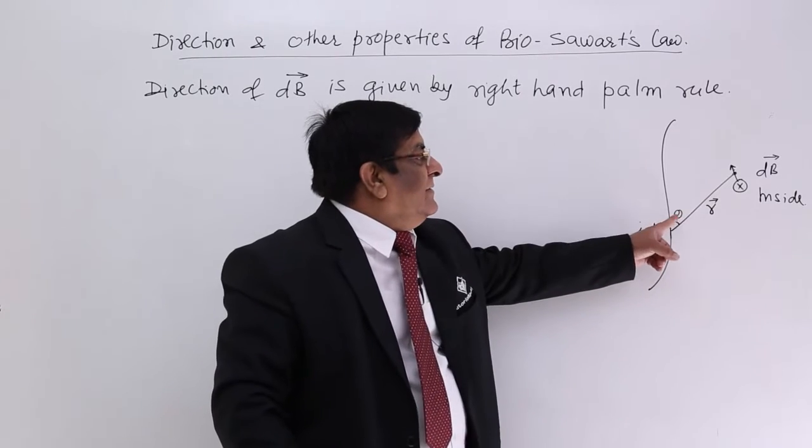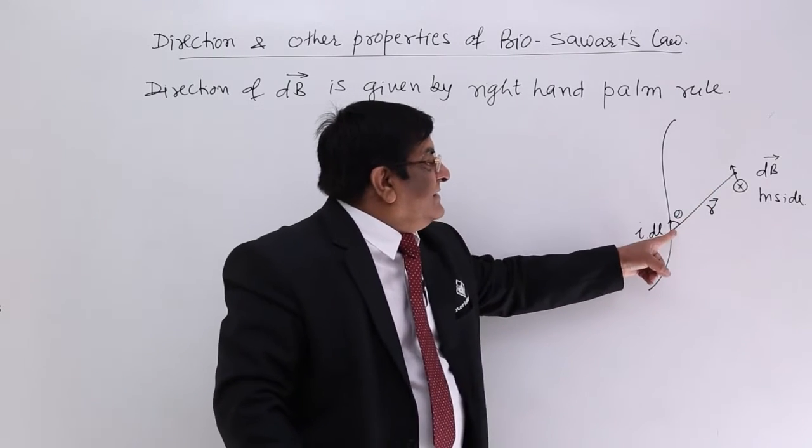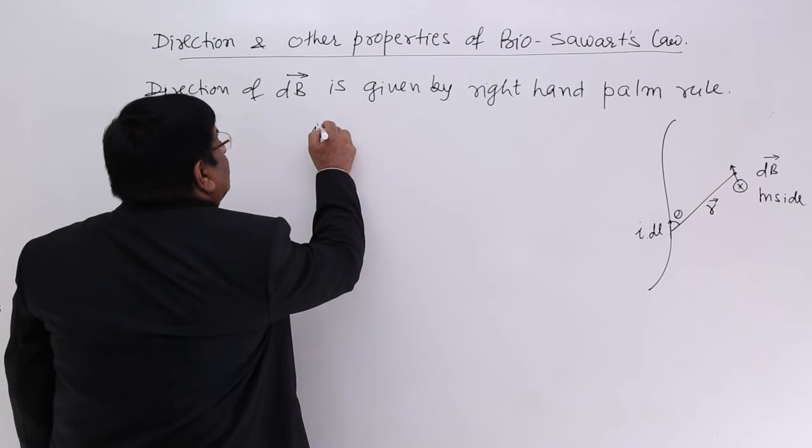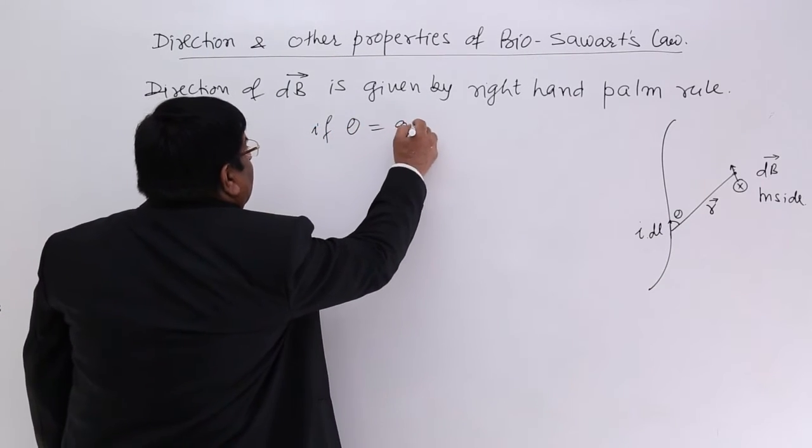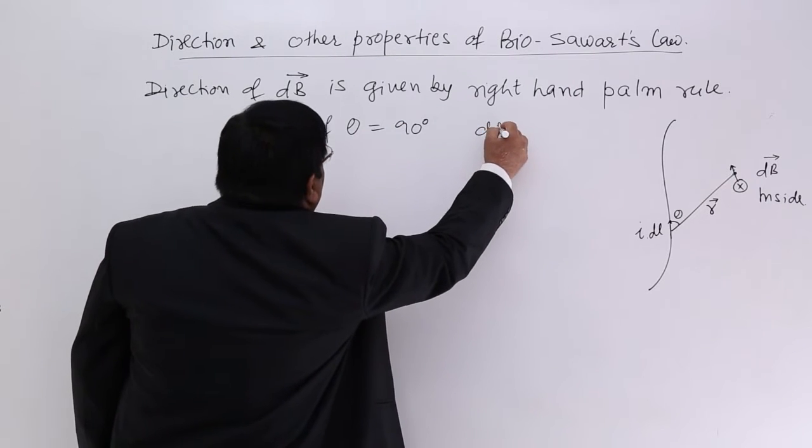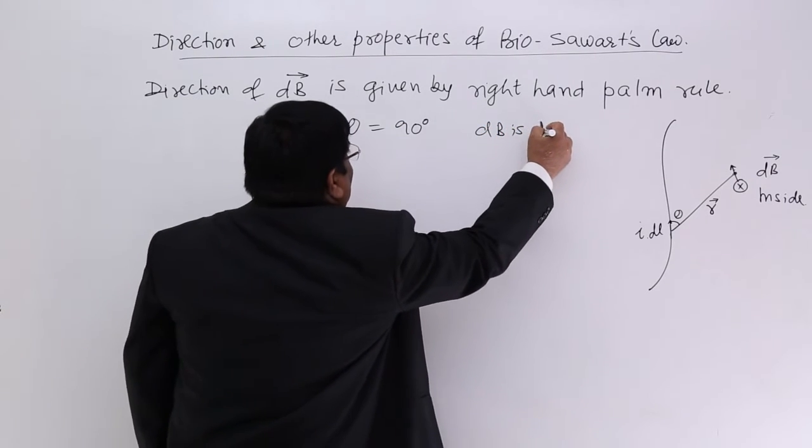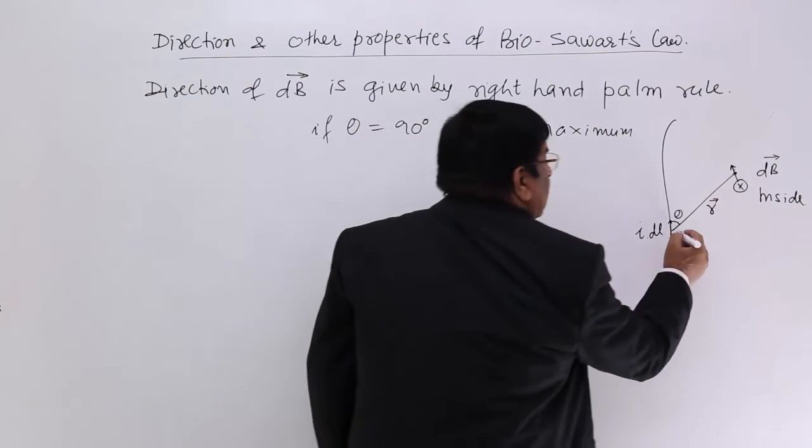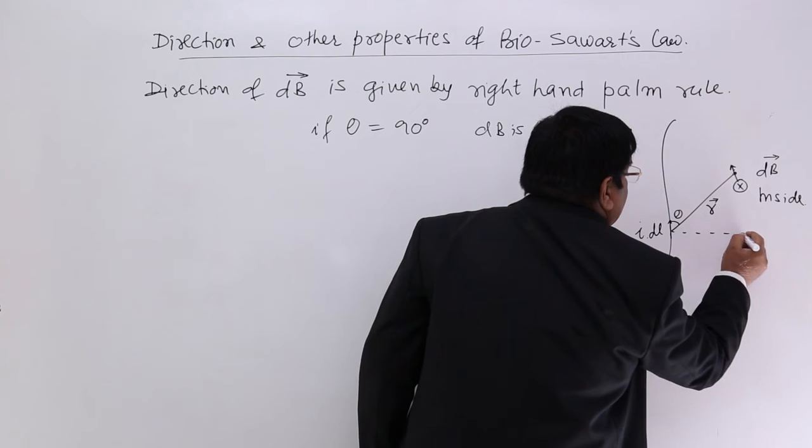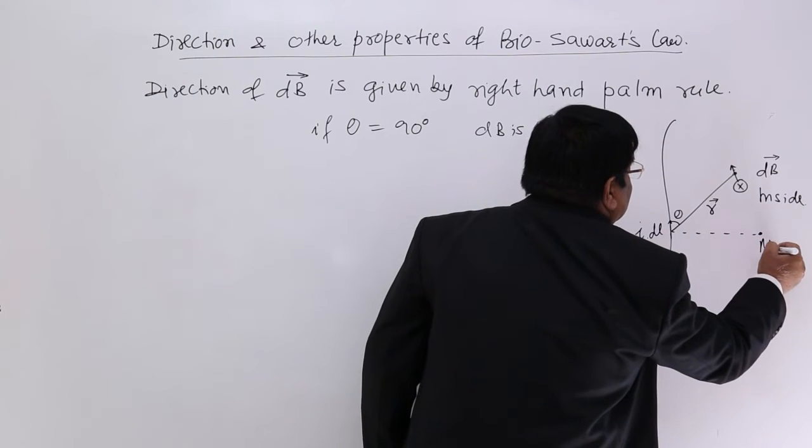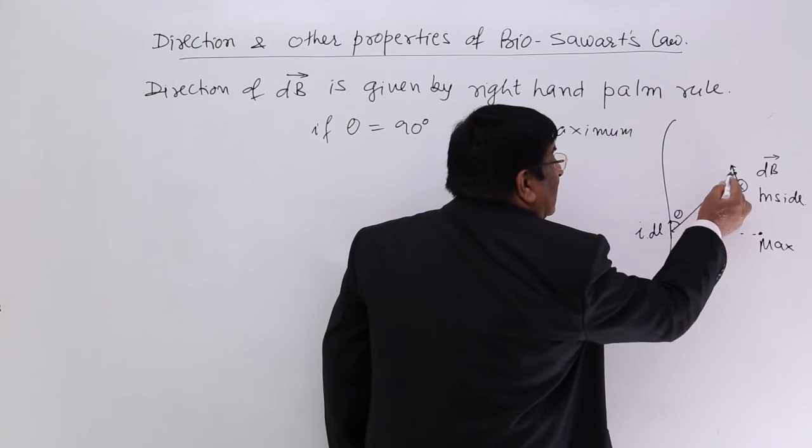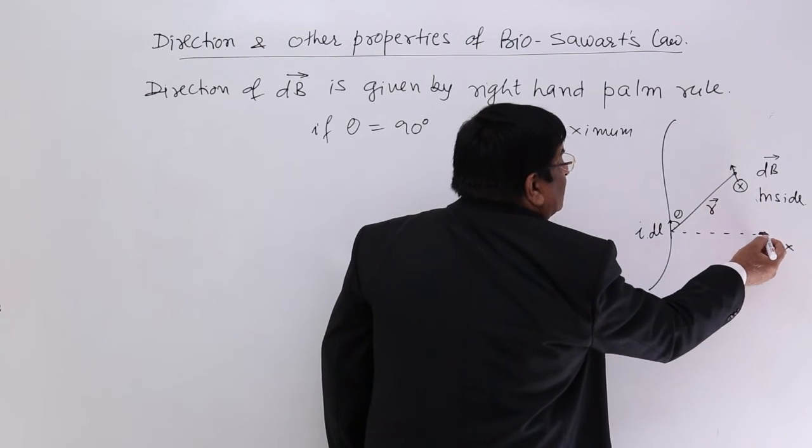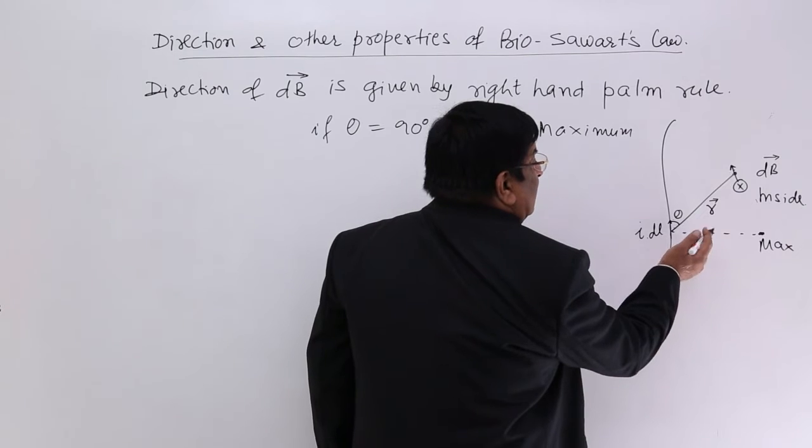It depends upon theta. If this R is making right angle, then if theta is equal to 90 degree, dB is maximum. Take reverse of this. Here it is maximum. For the same R. For the same R. It is maximum at this point. Because here it is 90 degree.